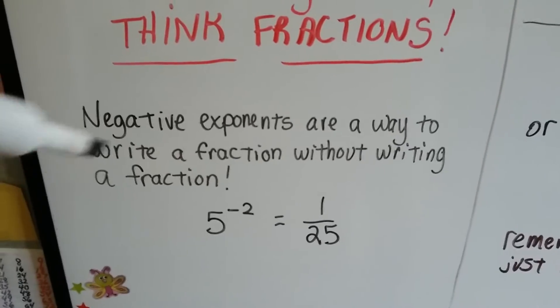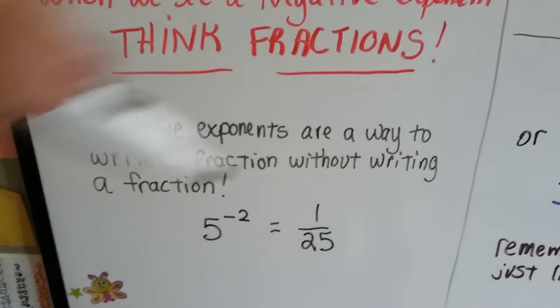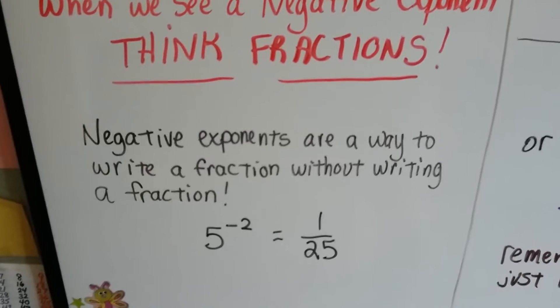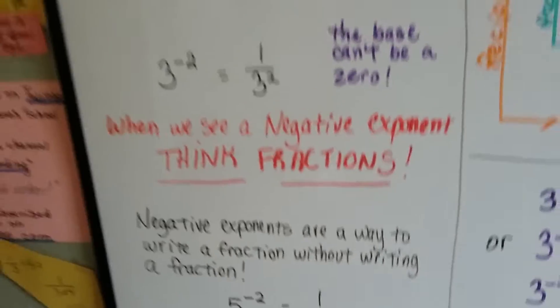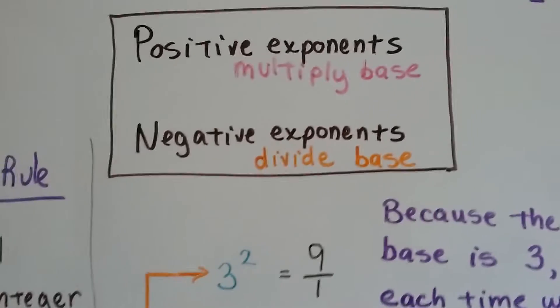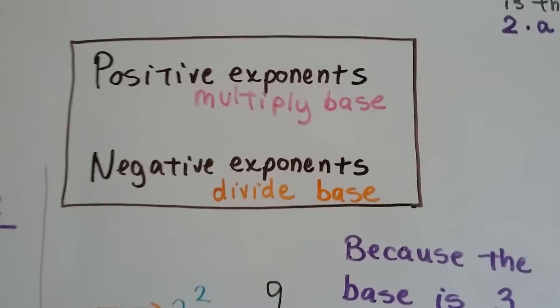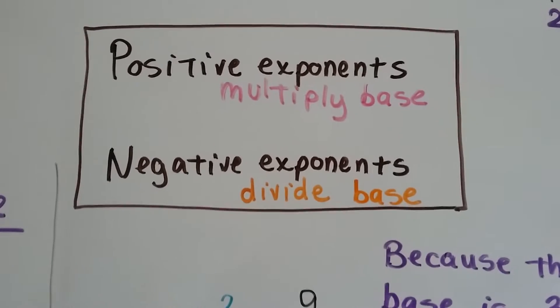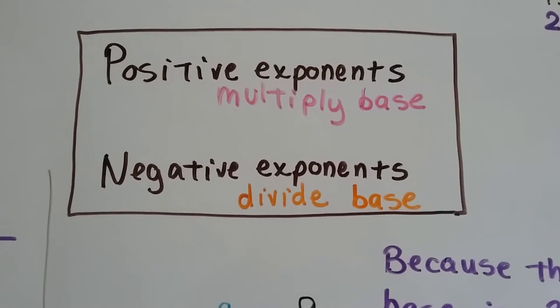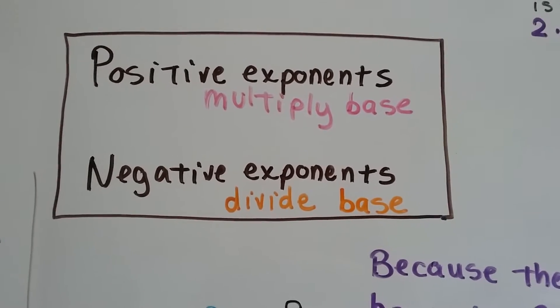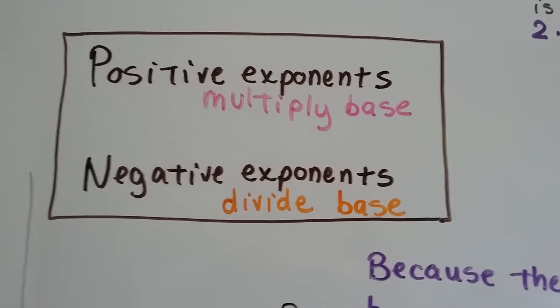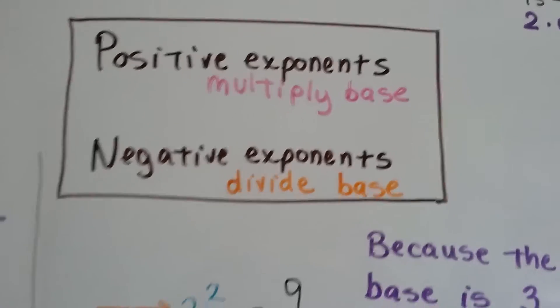Negative exponents are a way to write a fraction without actually writing a fraction. 5 to the negative second is a way of saying 1 25th. When we had positive exponents, we multiplied the bases together. With negative exponents, we divide the bases. It's the opposite — it's the inverse.